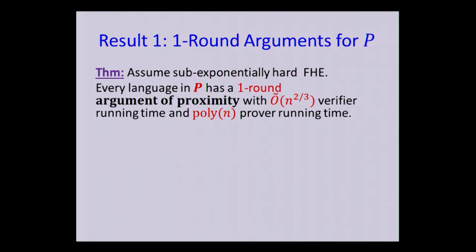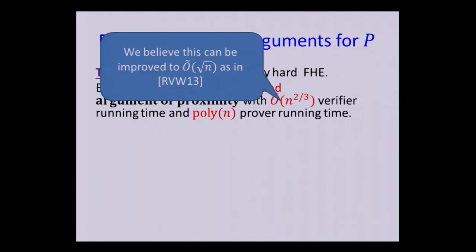So you might wonder where this n to the two-thirds comes from, and we also wonder this, so we think this can be improved to square root of n, but we haven't sort of fully proved that yet. But we believe that this is possible. Square root of n as in RVW.